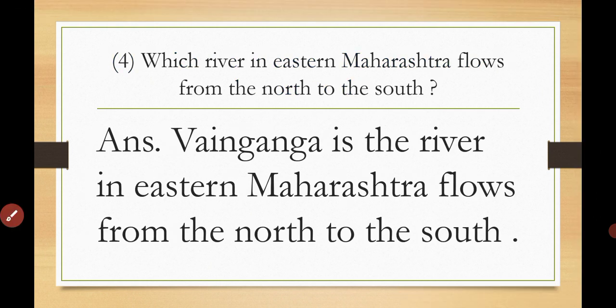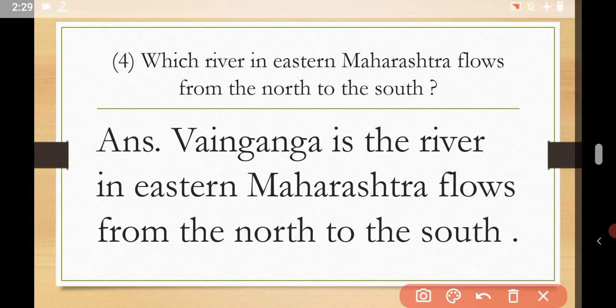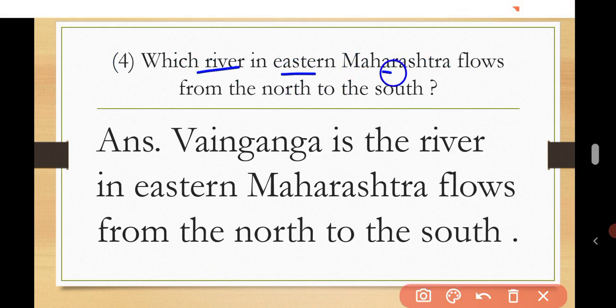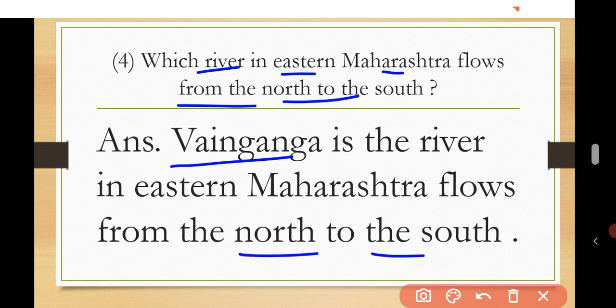Next question: which river in eastern Maharashtra flows from north to south? The answer is: Wainganga. Wainganga is the river in eastern Maharashtra that flows from north to south.